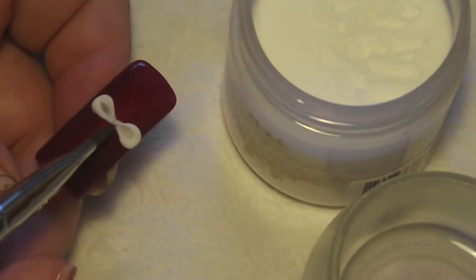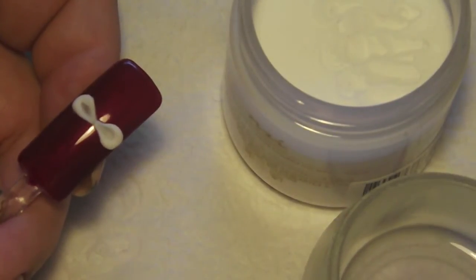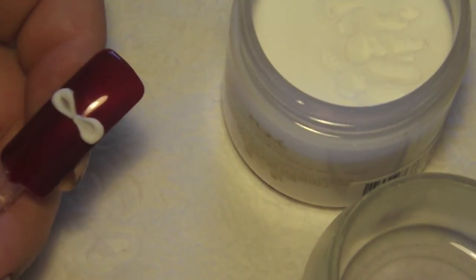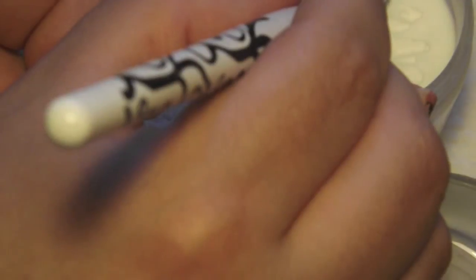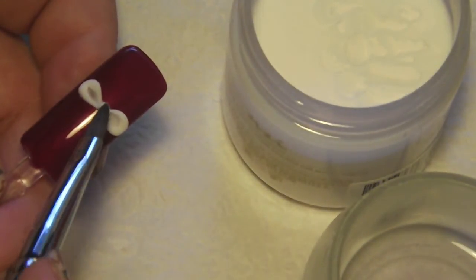You can either put more acrylic here in the center, or you can use a stone. I'm going to go ahead and use acrylic just to show you guys. Dip into the monomer, pick up a small ball of acrylic, and you're just going to place that right in the center.